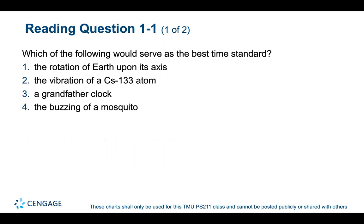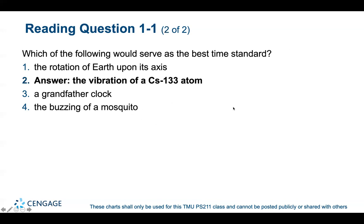The first question asks which of the following would serve as the best time standard: the buzzing of a mosquito, the rotation of the Earth, a grandfather clock, or the cesium-133 atom. The answer is the vibration of a cesium-133 atom — it is highly predictable, and cesium clocks are an example of an accurate atomic standard clock.